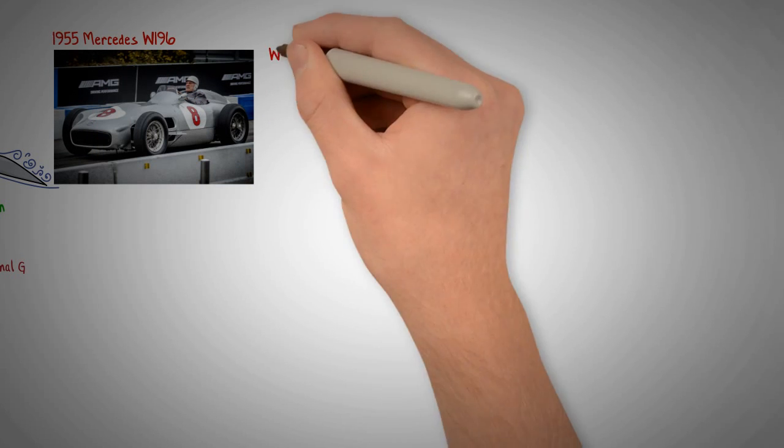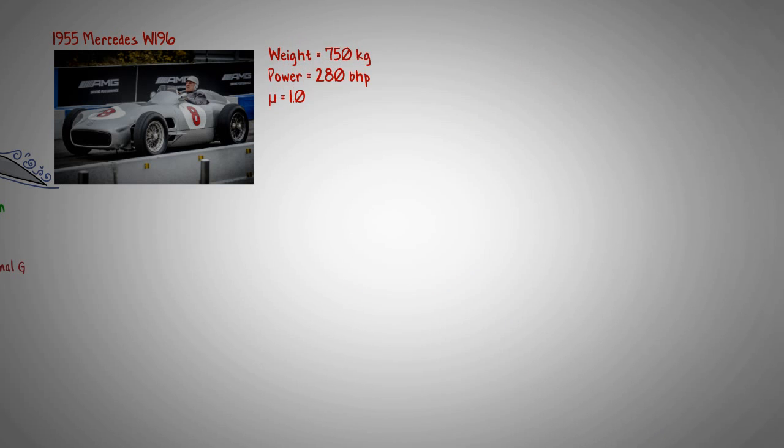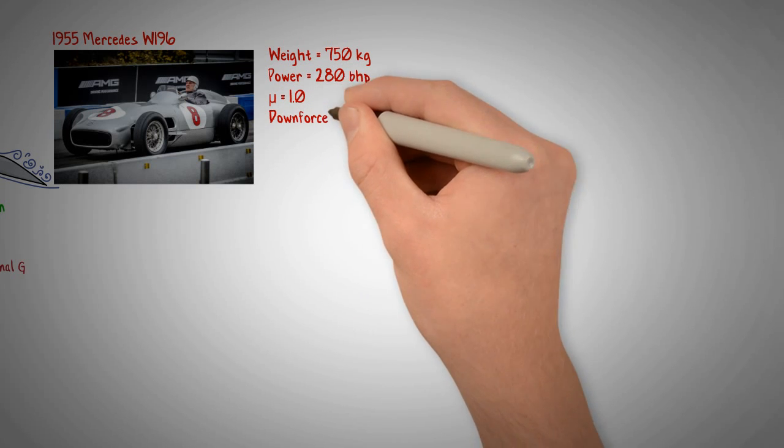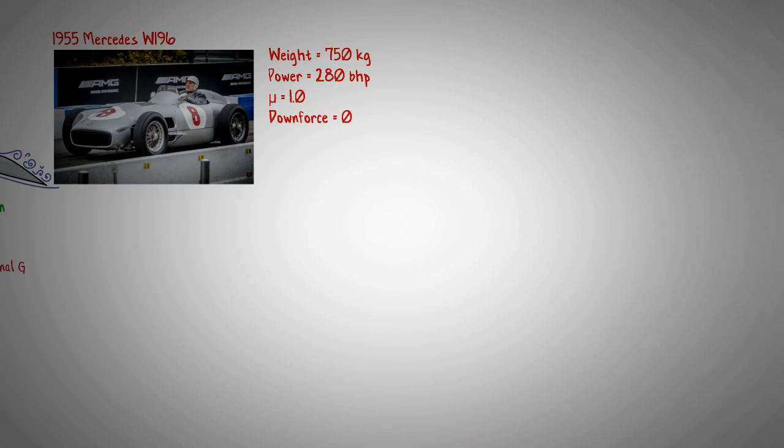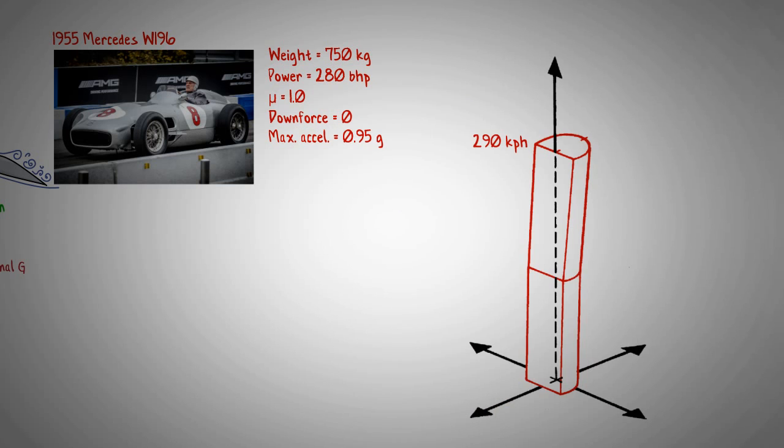It's very interesting to compare different cars' performance envelopes on the same diagram. Let's take the 1955 Mercedes W196, which was designed before engineers understood that aerodynamic downforce was beneficial. This car gives zero downforce across its speed range, and because its weight remains constant, its performance envelope is a straight cylinder. Its top speed is around 290 kilometers per hour.